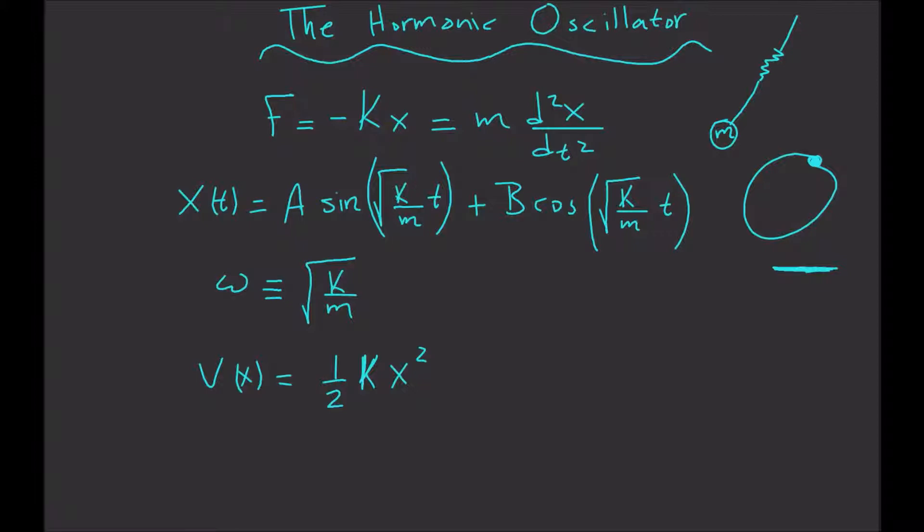Of course, there is no such thing as a perfect simple harmonic oscillator. If you stretch the spring too far, it's going to break, and typically Hooke's law fails long before this point. This potential function is an approximation given by a Taylor expansion, a Taylor series.